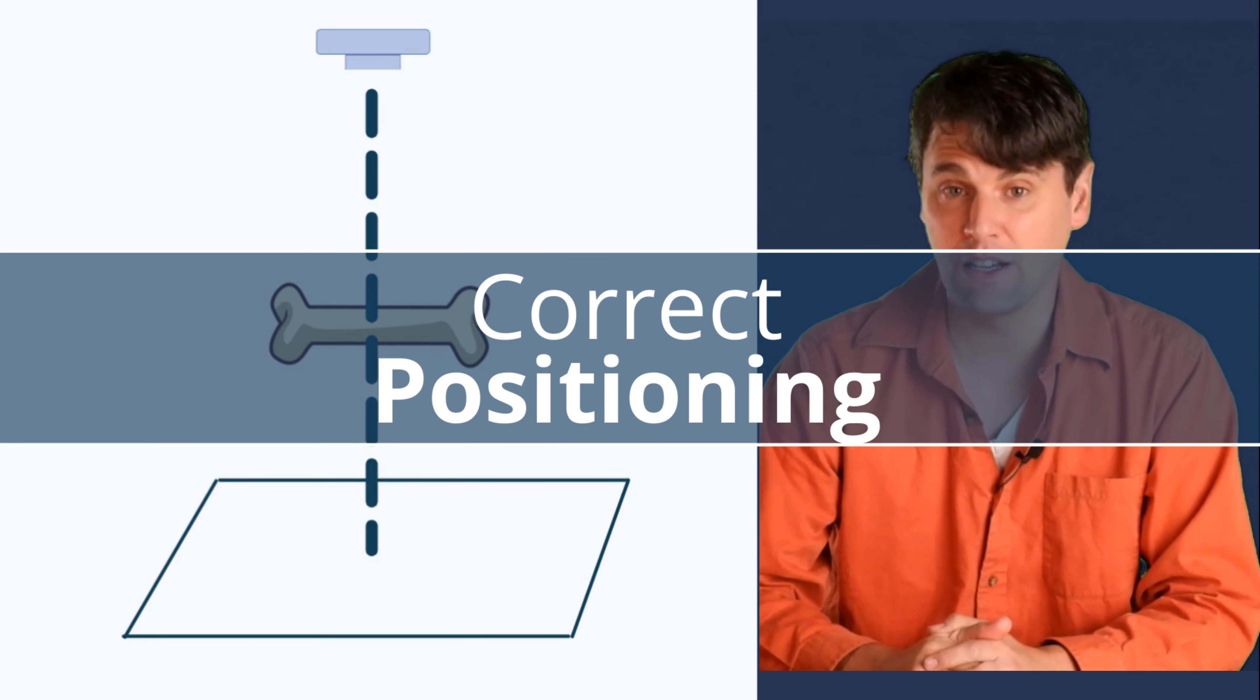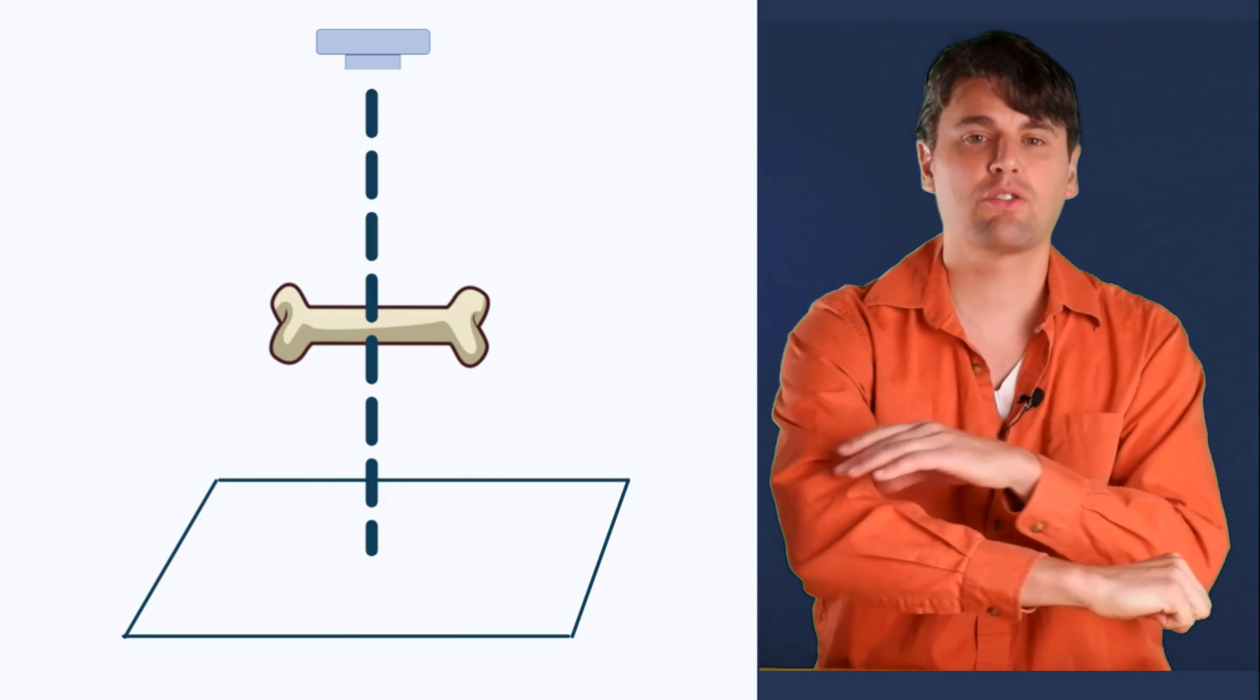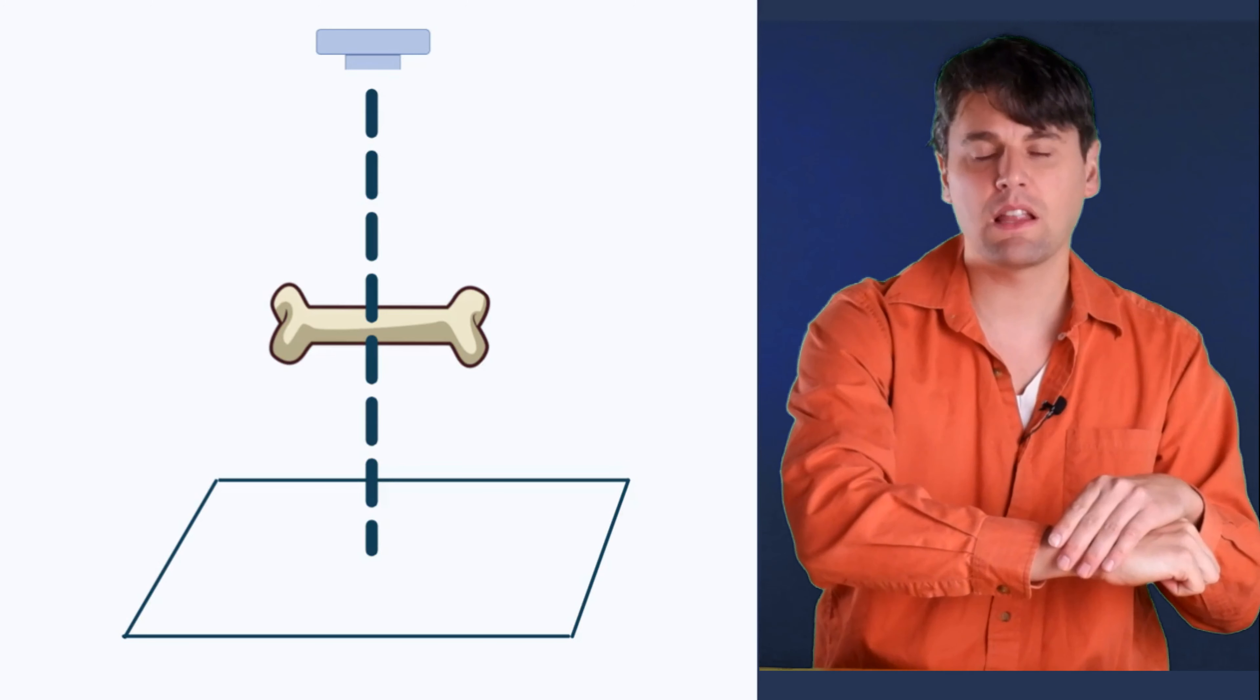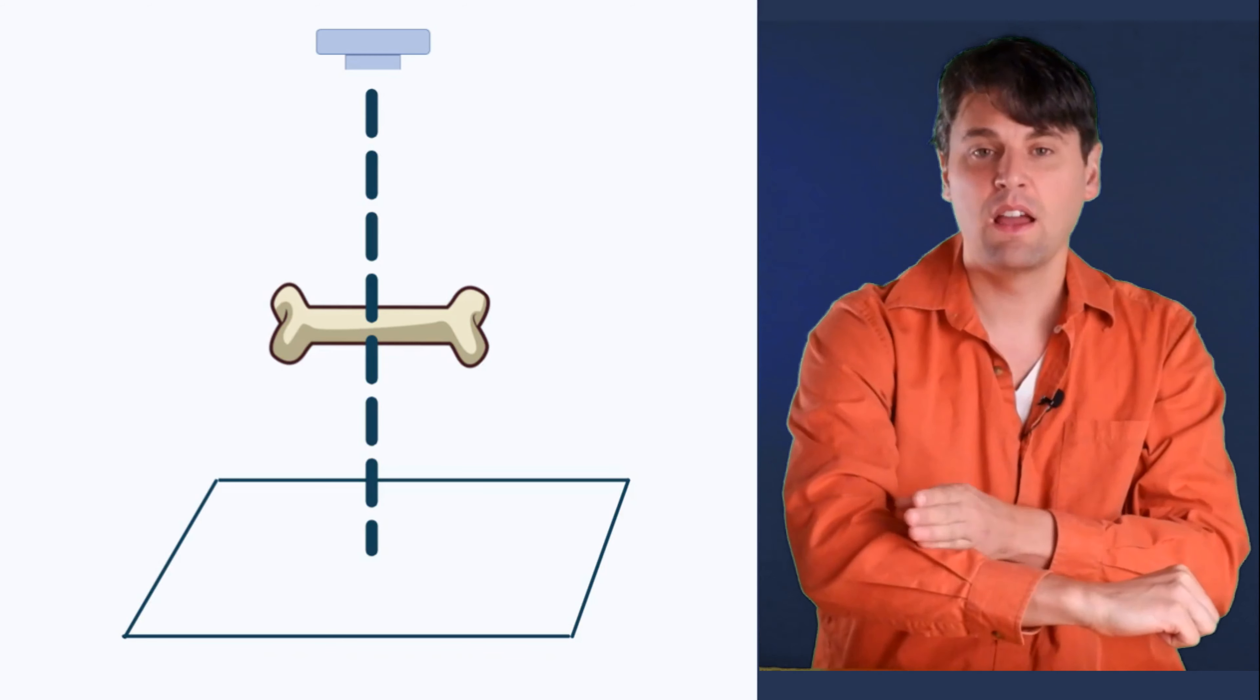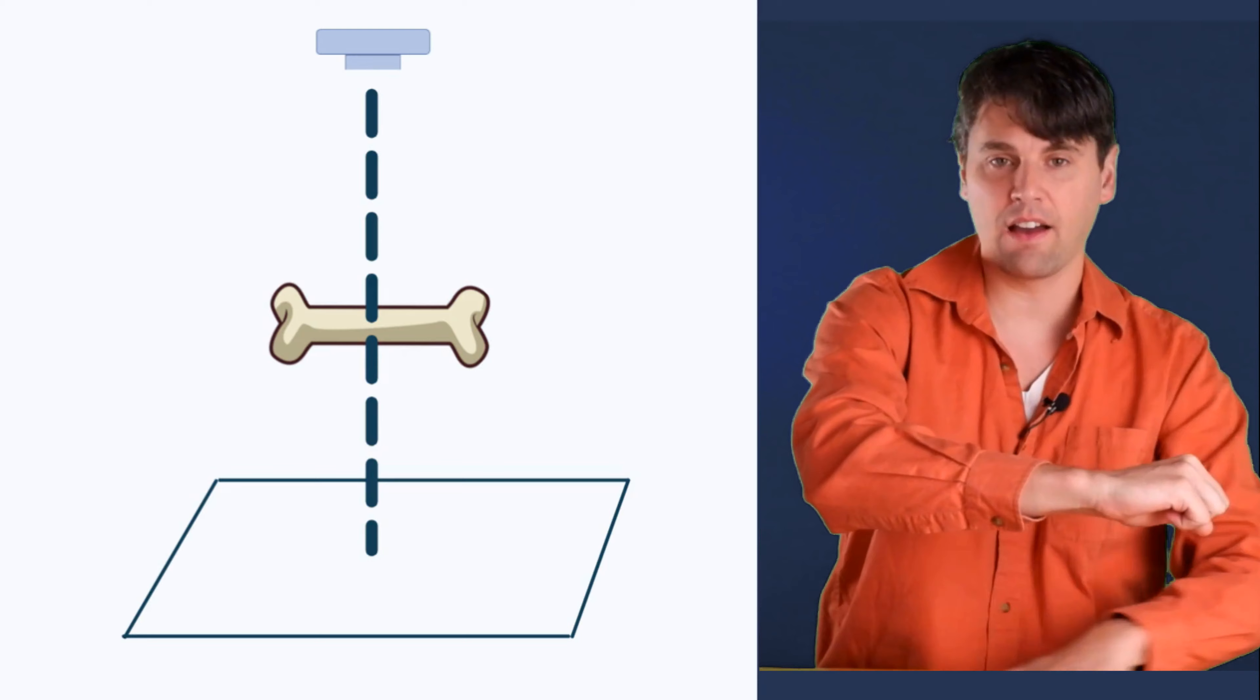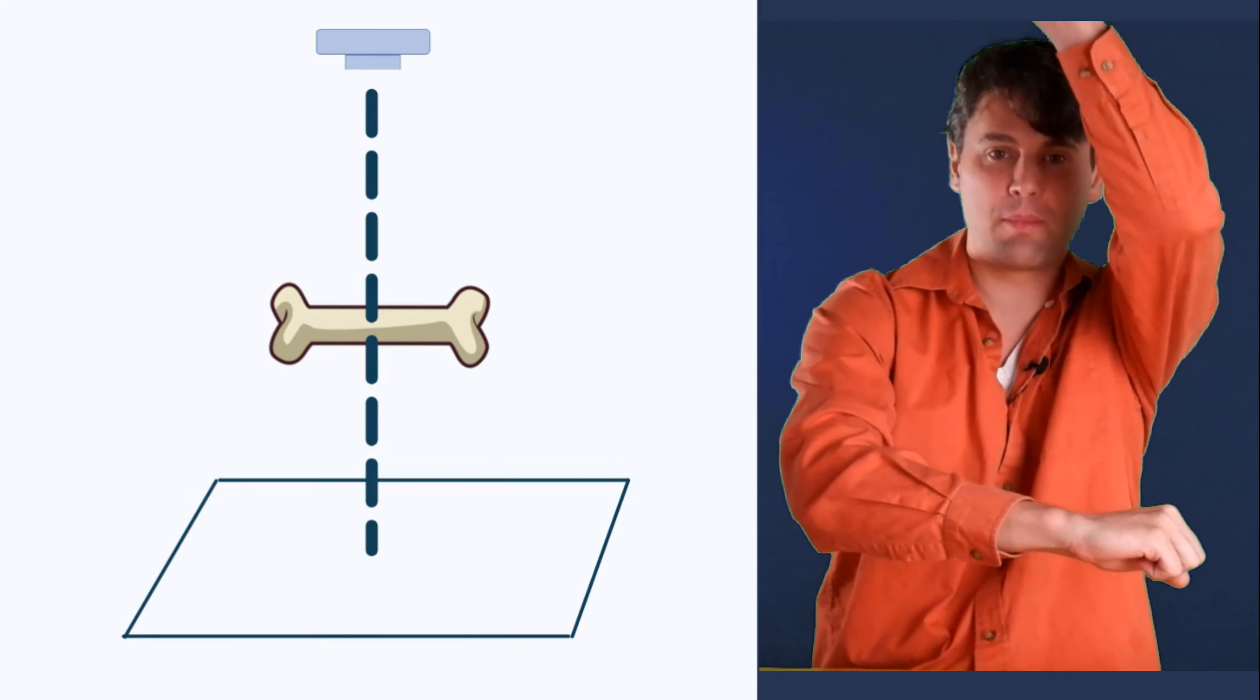We're going to start off with the ideal case, wherein the bony anatomy that you're trying to acquire, the primary anatomy, you would like to have the primary ray, what we call the iso ray, be perpendicular to that bone. And you would also like to have your image receptor be perpendicular to that primary ray.